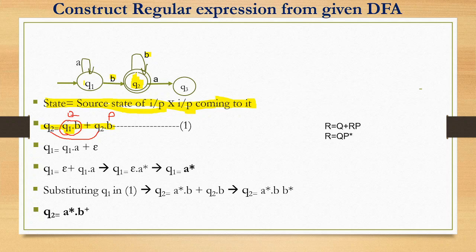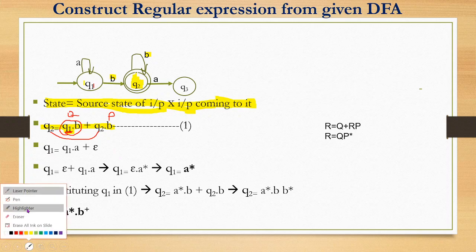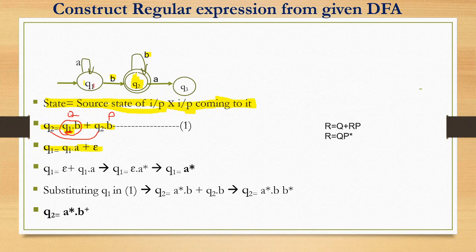Now we need to find Q1. Q1 is the start state, so Q1 equals Q1·A plus epsilon. This matches the Arden's theorem form R equals Q plus RP, where Q is epsilon and P is A. Applying the theorem gives Q1 equals epsilon into A star, which equals A star.